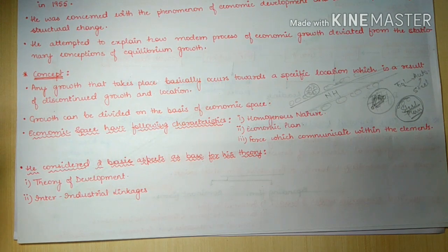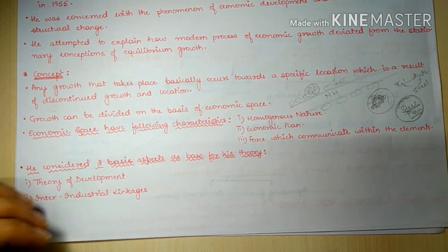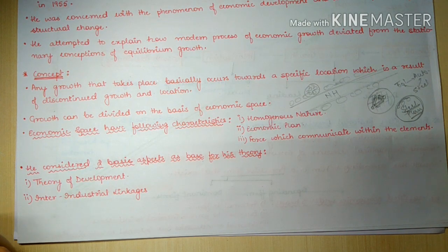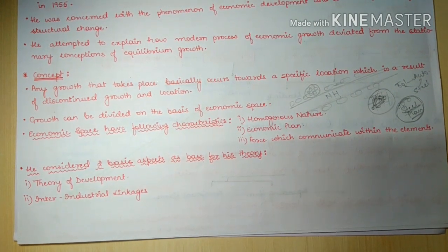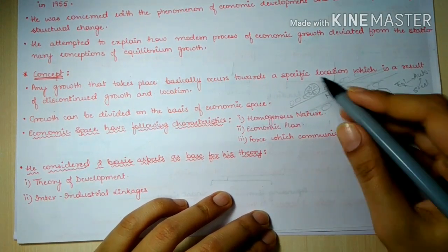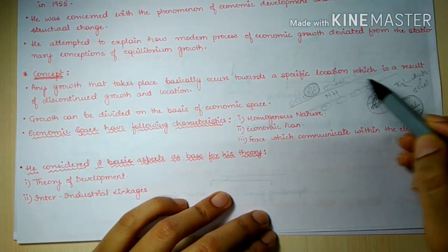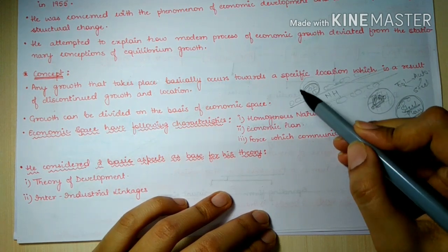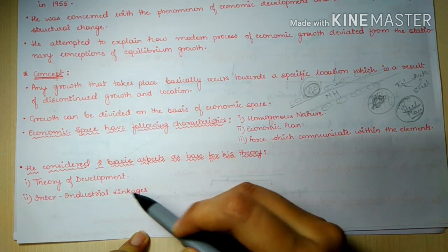Perroux considered two basic aspects as the base of his theory. First was the theory of development, and another was inter-industrial linkages. The theory of development states that growth is not seen everywhere but is in the form of an aggregate or a cluster - like along a national highway, growth is seen in clusters, not uniformly spread. It will be seen in the form of agglomeration.